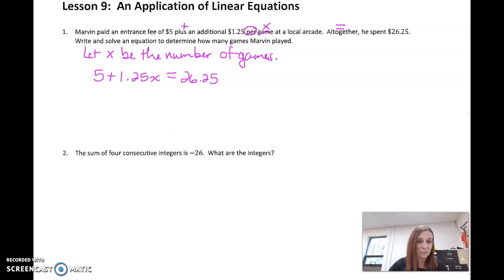So remember, we're solving for our x term right here. So we're going to get rid of whatever's being added to or subtracted from either side here. So I'm going to get rid of this 5. I'm going to combine 5 with a negative 5. If I have 5 and I take away 5, that cancels. And I'm left with 1.25x equals, if I subtract 5 from 26.25, $21.25.